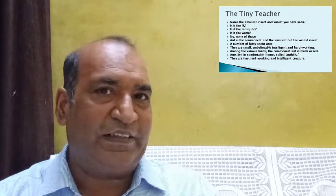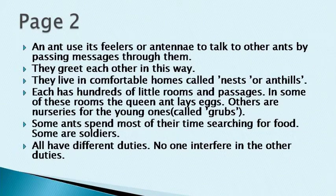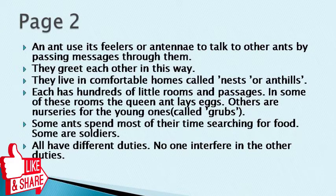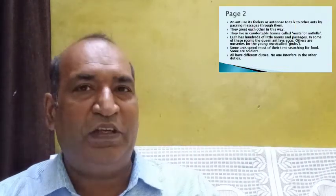An ant uses its feelers or antenna to talk to other ants by passing messages through them. They greet each other in this way. They live in comfortable homes called nests or ant hills. Each nest has hundreds of little rooms and passages. In some of these rooms are the queen and nurses for the young ones called grubs. Some ants spend most of their time searching for food, some are soldiers — all have different duties and no one interferes in the other's duties.